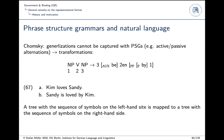We have seen phrase structure grammars so far. They go back to Bloomfield's work and Chomsky was the first one to formalize them — that was one of his important papers on properties of phrase structure grammars. But then he went on and said that phrase structure grammars as such are not sufficient for capturing natural language. He suggested — as did his supervisor Zellig Harris — to use transformations.